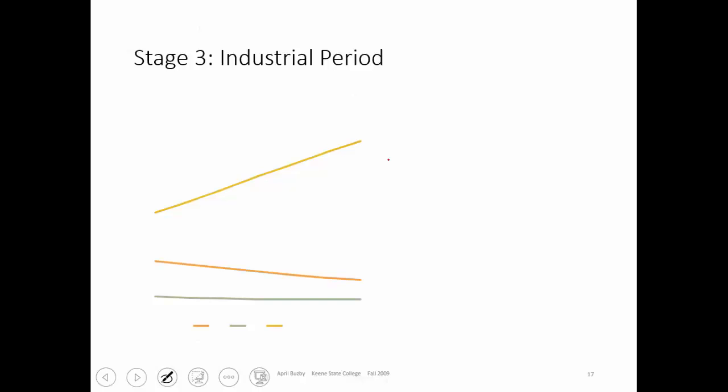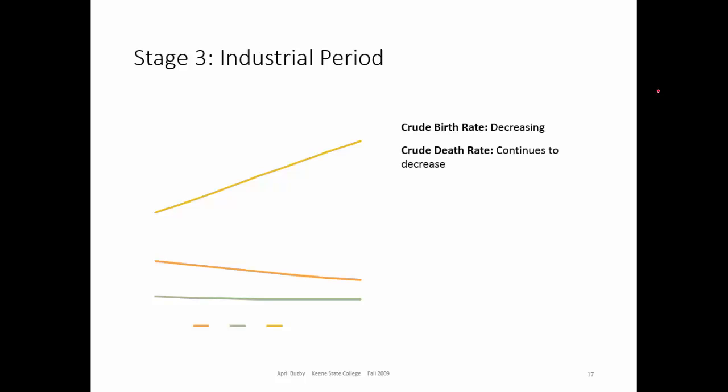This is the fully industrial period. Because you don't need workers, you don't need all those hands, you have a decreasing birth rate. But because of industrialization, sanitation, and healthcare, the death rate continues to decrease. You still have a population increase, but at a slower rate.